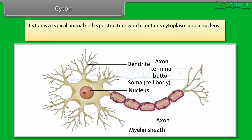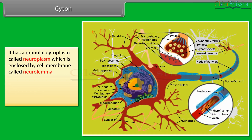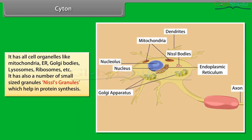The cytone is a typical animal cell structure containing cytoplasm and a nucleus. It is spherical in shape, about 4 to 135 micrometres. It has a granular cytoplasm called neuroplasm, enclosed by a cell membrane called neurolemma. It also has a large spherical and centric nucleus. It contains all cell organelles like mitochondria, ER, Golgi bodies, lysosomes, ribosomes, etc.